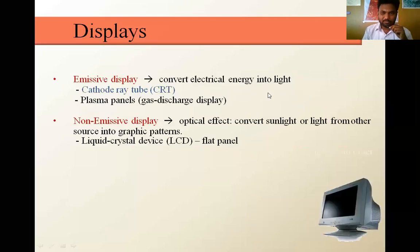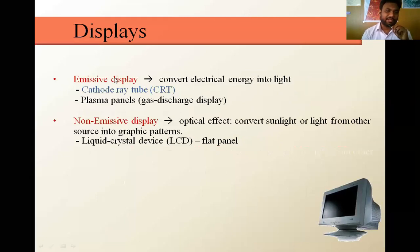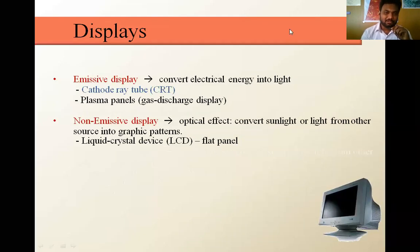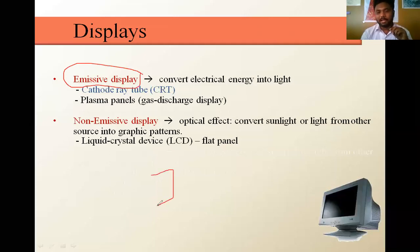Basically we have two different types of display devices, classified into two types. The first one is the emissive display and the second one is the non-emissive display. The main difference is that in the emissive display, we are going to generate high electron beam waves, while in the non-emissive display, we are not going to generate any electron beam waves.